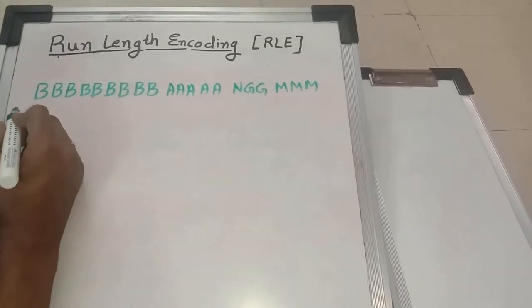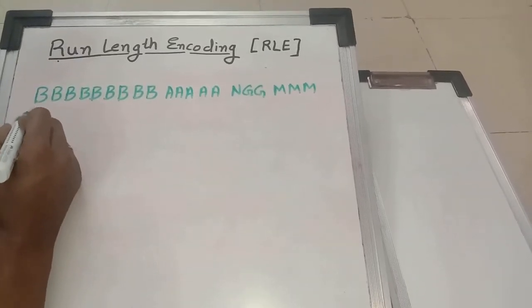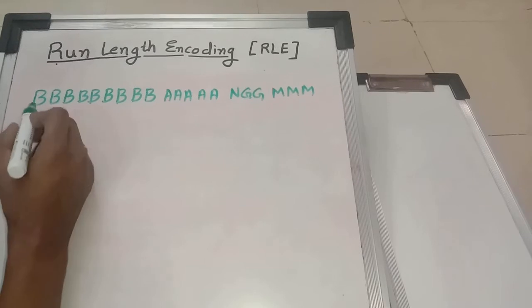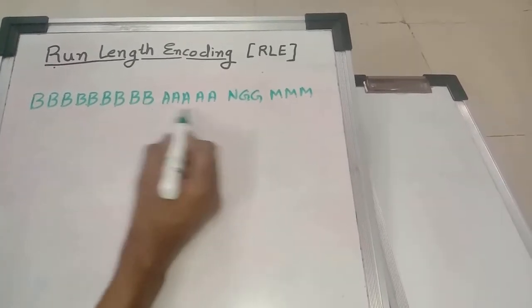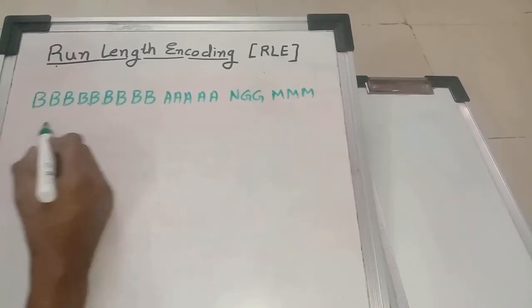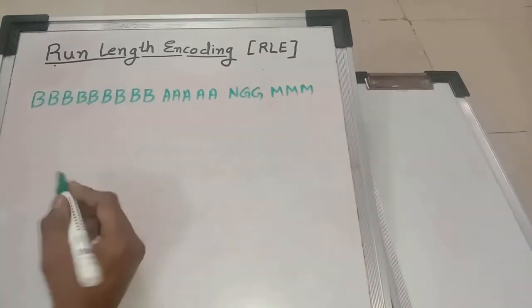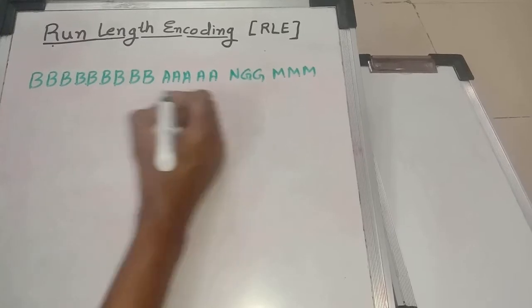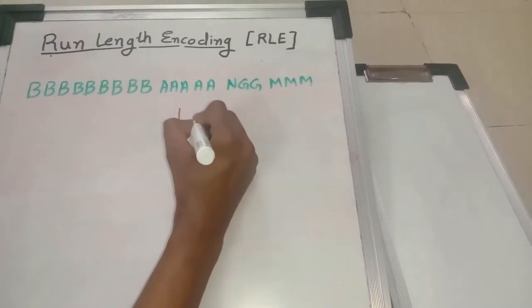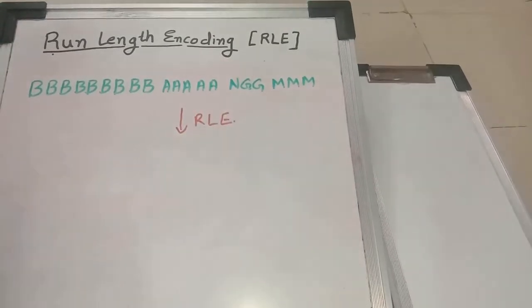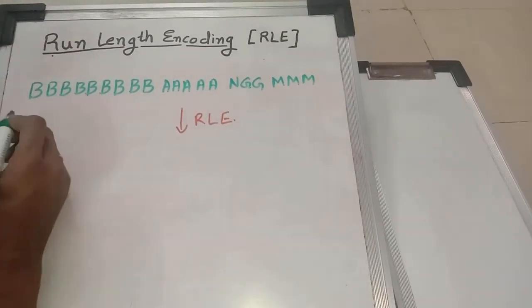To understand run length encoding, we will consider this example in which this string of characters, instead of sending this string of symbols as is, we can use run length encoding, we can use RLE.